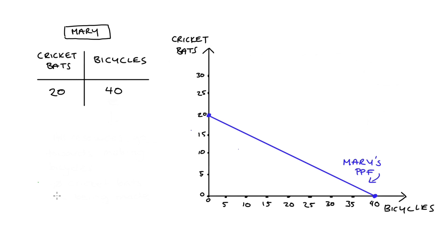Now it is worth noting that the PPF slope is equal to the opportunity cost of producing the horizontal axis good, bicycles. And this means that in examples like this, where I just joined the two points together in a straight line, we're assuming that the opportunity cost of producing bicycles for Mary is constant as she produces more bicycles. Actually, this sort of assumption is very common in these sorts of questions.